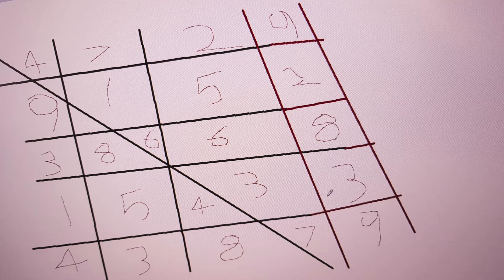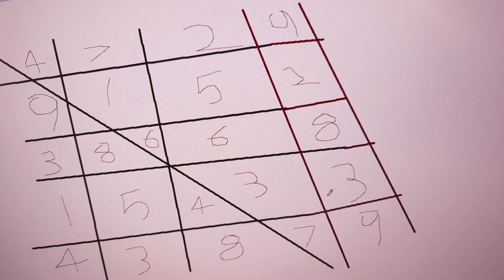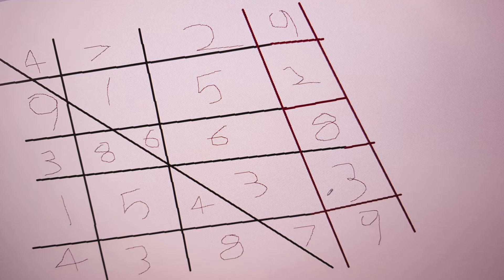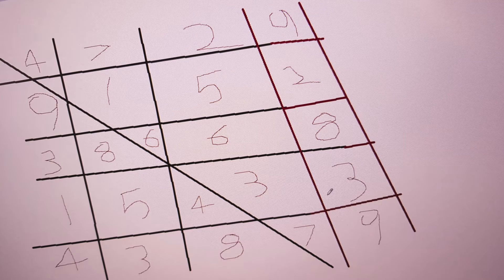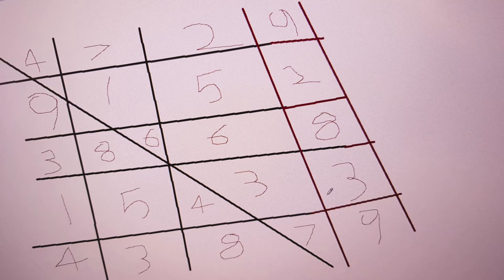And then we've got the next grid, which starts with the number 4, generated by the game. Then we've got the number 1 generated by us, then the number 3 generated by us, then the number 9 generated by us, then the number 8 generated by us, the number 7 generated by us, the number 2 generated by us, the number 6 generated by the computer, and the number 5 generated by us.